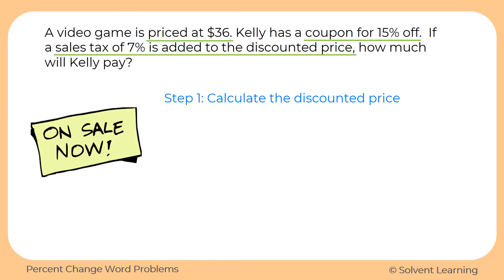First we'll calculate the discounted price — that means figuring out what 15% of $36 is. When calculating with percentages, you have to convert to a decimal or fraction. So 15% becomes 0.15, and we multiply that by $36, which gives us $5.40. That's how much gets taken off the price. Subtracting from $36 leaves us with $30.60 — that's the discounted price of the video game.